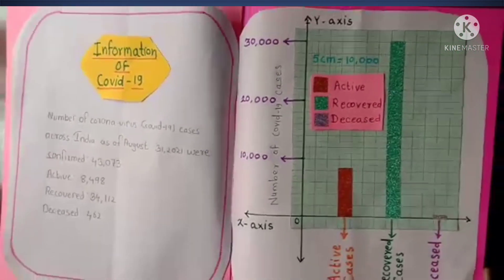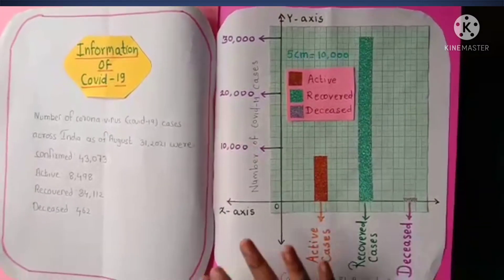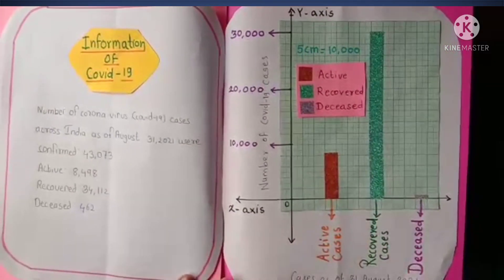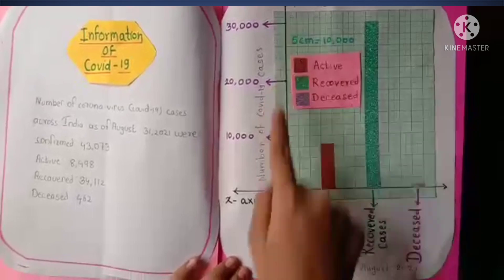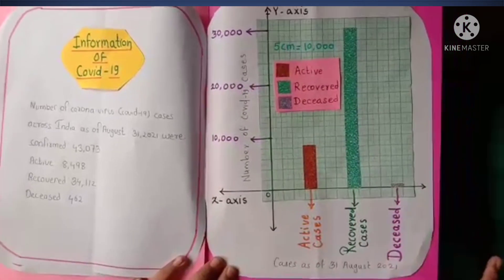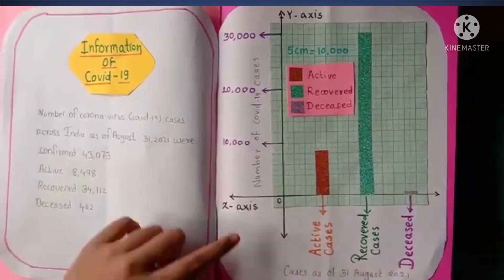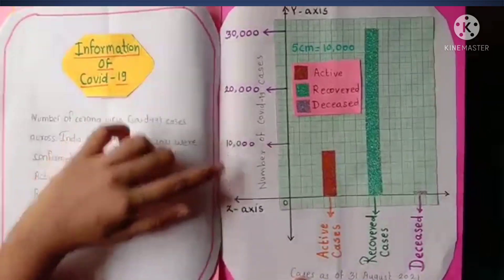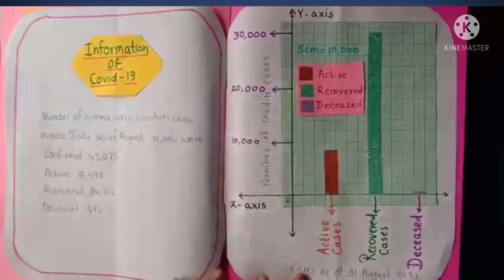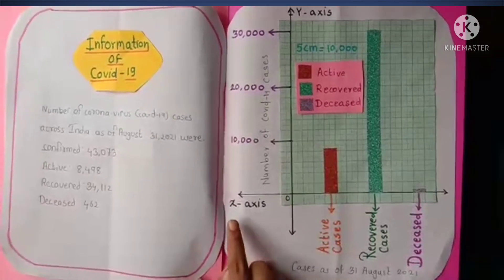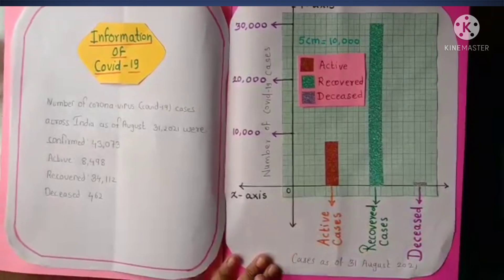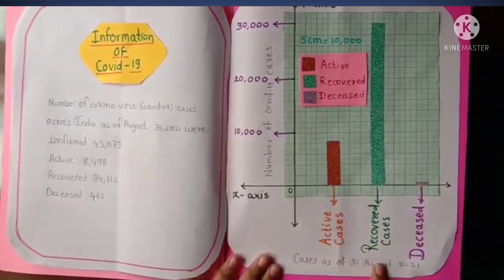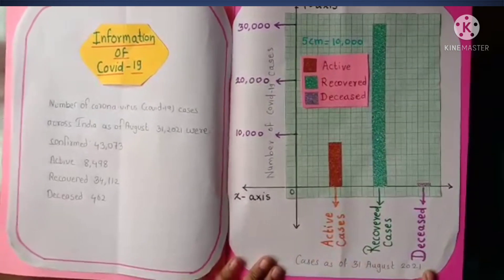Here is the bar graph of COVID-19 cases. Here is the y-axis and here is the x-axis. On the y-axis I have represented the number of COVID-19 cases, and on the x-axis I have represented the active cases, recovered cases, and deceased cases.